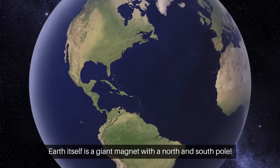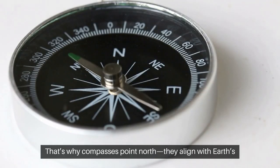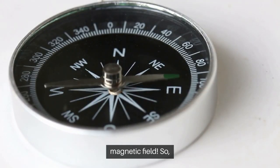Earth itself is a giant magnet with a north and south pole. That's why compasses point north. They align with Earth's magnetic field.